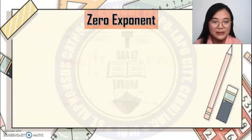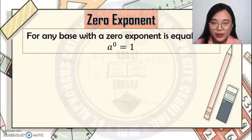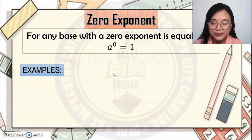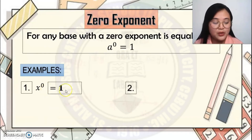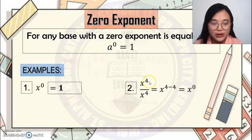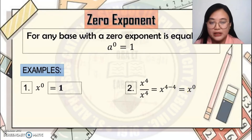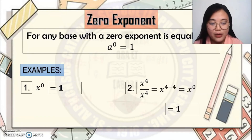Zero Exponent. Any base with a 0 exponent is equal to 1. Any number raised to the power of 0 equals 1. For example, x raised to 0 equals 1. To verify: x to the 4 over x to the 4 gives x to the power of 4 minus 4 equals x to the 0, and any base with a 0 exponent equals 1.